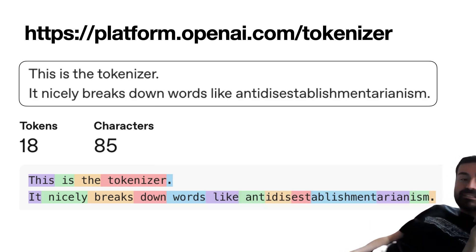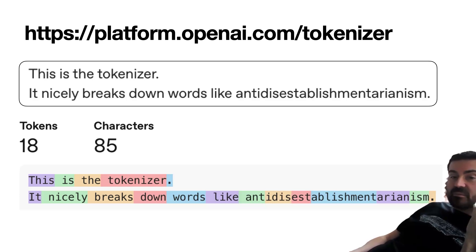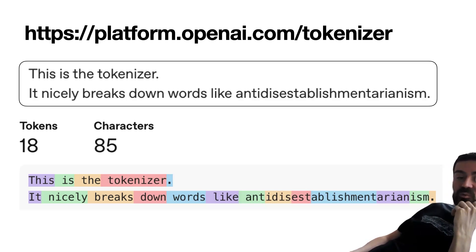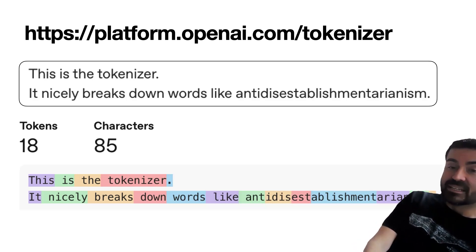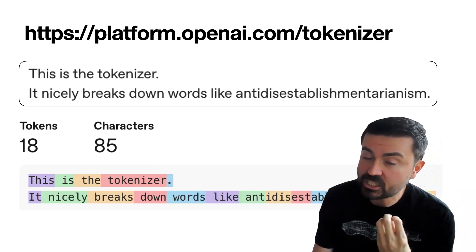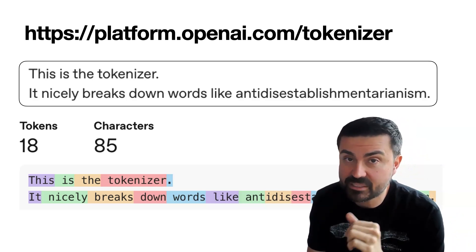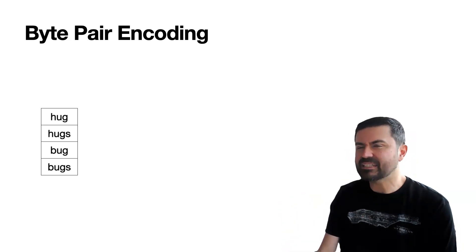A demo that works pretty well is the OpenAI tokenizer — you can look at the link above. As you can see, every word is a token, and periods, exclamation signs, all that are also tokens. But if you have a really long word like 'antidisestablishmentarianism,' well, that gets broken into suffixes and prefixes. The question is, how do we build these tokens? There are many ways to do it, but I'm going to tell you one which is called byte pair encoding, and it's pretty logical.